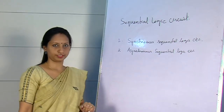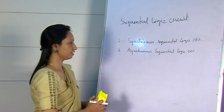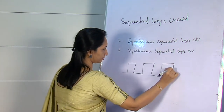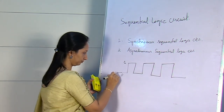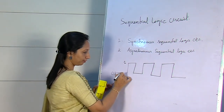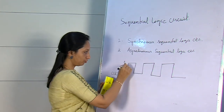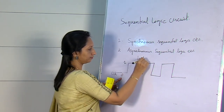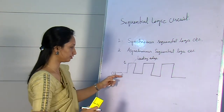What is a synchronous logic circuit? The synchronous logic circuit depends on the clock pulse. The clock pulse is a signal which consists of two states, that means 0 and 1. This is the clock signal. When there is a transition from 0 to 1, it is called the leading edge, or positive edge.